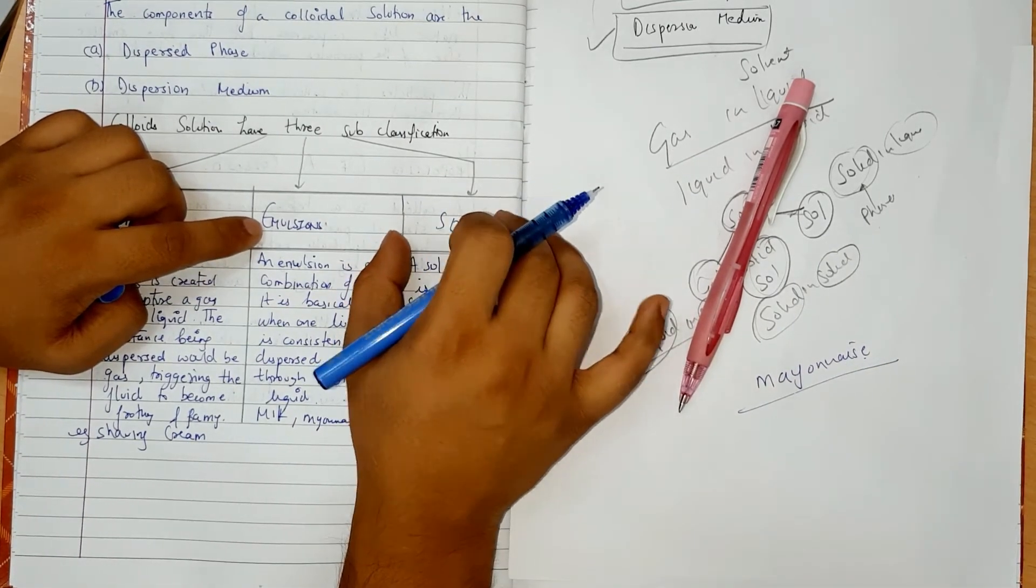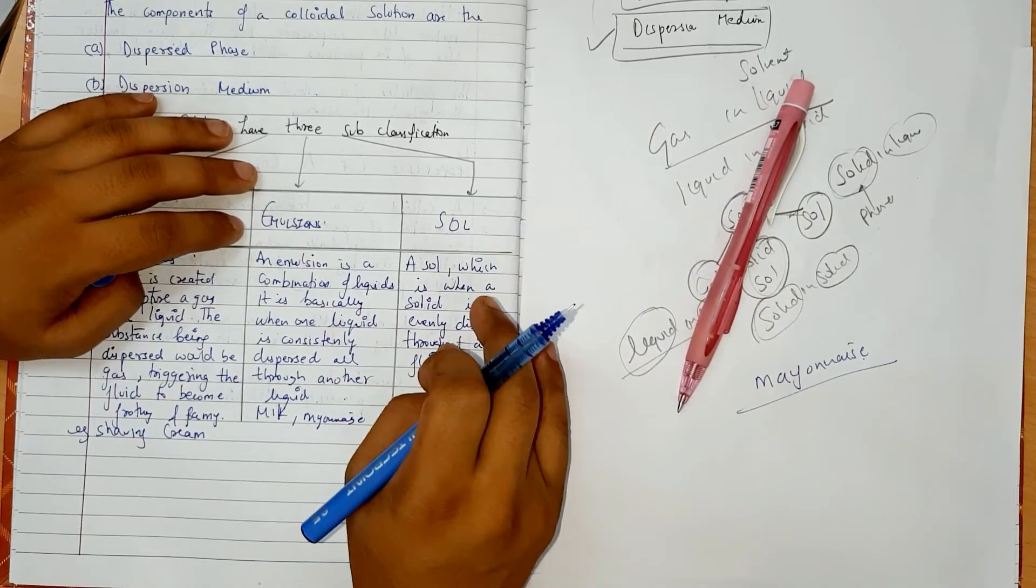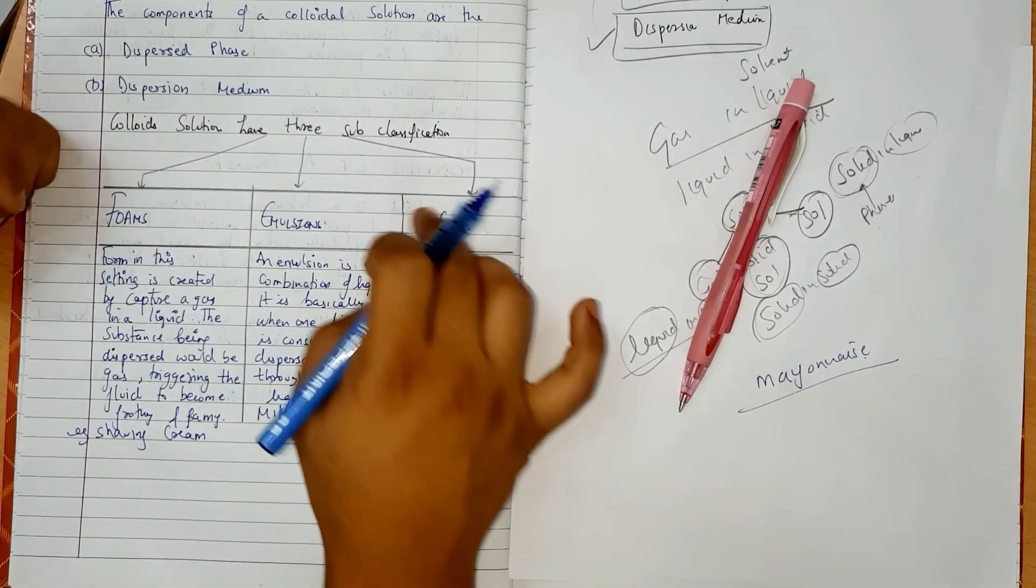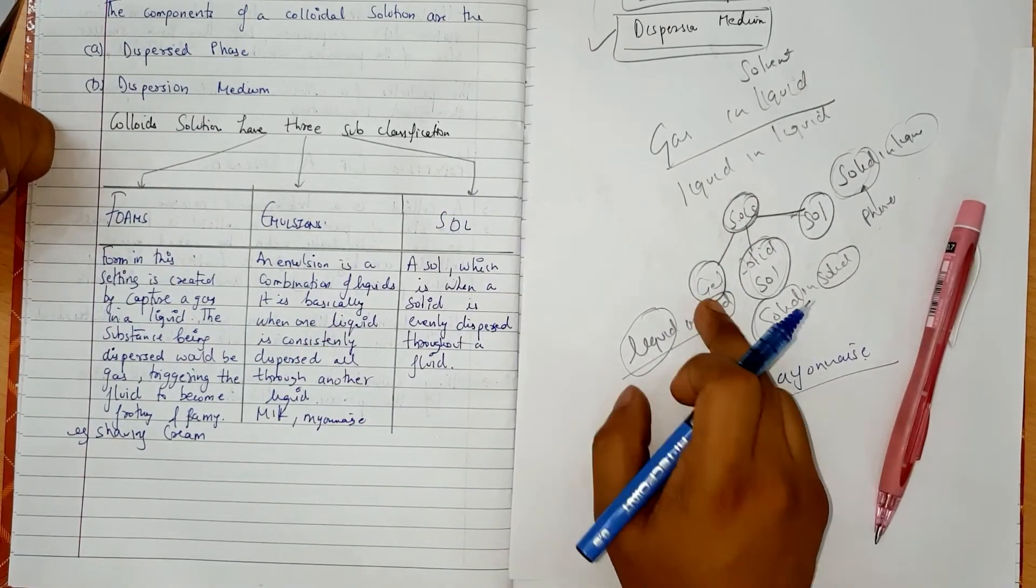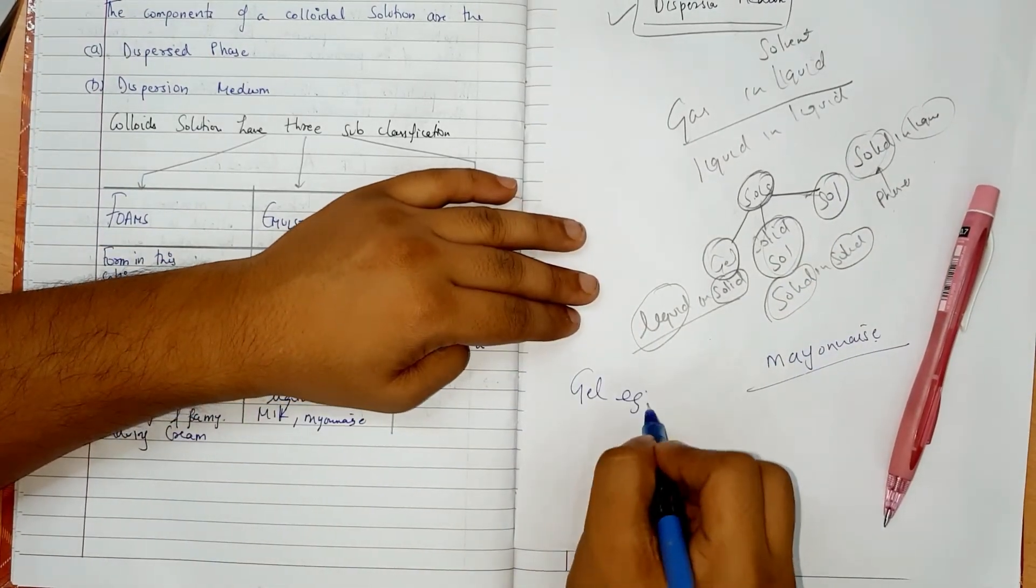What do we have? Sols. In liquid. Which is when a solid is evenly dispersed throughout a liquid, throughout a fluid that is gel, solid sol, and sol.